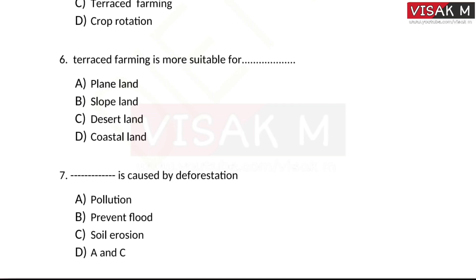Next question: terrace farming is most suitable for which type of land? Options: A) plain land, B) desert land, C) coastal land, D) slope land. The right answer is option D, slope land — terrace farming is specifically designed for hilly or sloped terrain.